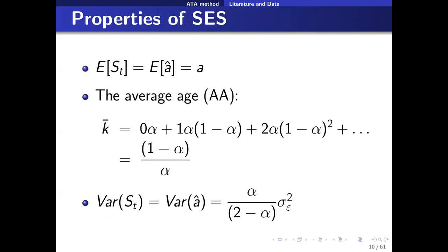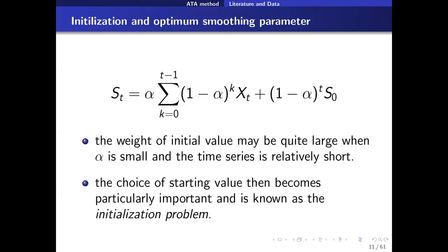We can obtain an unbiased estimate of the level using simple exponential smoothing. The average age of the model equals (1 minus alpha) over alpha, and the variance of st equals alpha over (2 minus alpha) times sigma squared. Even though simple exponential smoothing is very popular, it suffers from a problem related to the initial value, especially when the optimum smoothing parameter alpha is small and the time series is relatively short. In that case, most of the weight goes to the initial value rather than actual observations, making the model very sensitive to the choice of the starting value. This is known as the initialization problem in the literature.